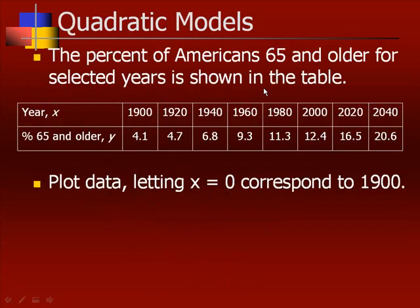The percent of Americans 65 and older for selected years is shown in the table. In the year 1900, the percent of Americans 65 year and older was 4.1. In 1920, it was 4.7, and so forth. First thing we want to do is plot the data, letting x equals 0 correspond to 1900. So we need to readjust. This is 0, this is 20, this is 40, this is 60, this is 80. These are the number of years since 1900. These are the numbers we're going to put in our calculator.